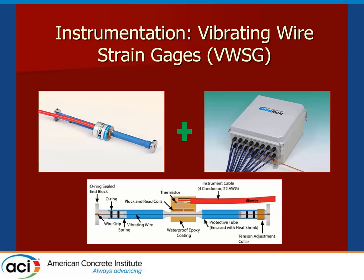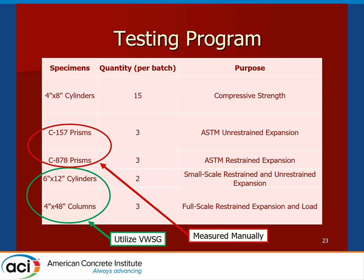Similar to what Dr. Ramsey described in the tank and bridge deck study, vibrating wire strain gauges were used for automated data acquisition; where strain was not measured by gauge, it was measured manually. The testing program consisted of 4 by 8-inch concrete cylinders for compressive strength. ASTM C157 and C878 were measured manually for unrestrained and restrained expansion, and vibrating wire strain gauges were used for 6-inch by 12-inch restrained and unrestrained cylinders, as well as the same type of 4-inch by 48-inch columns described in the previous work. C157 is primarily intended as a shrinkage test but was used here to measure unrestrained expansion because of its geometric similarities to the C878 test.